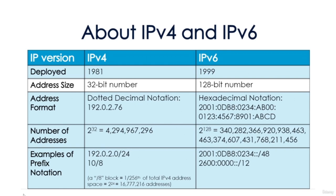IPv4 uses 32-bit source and destination addresses, usually shown in dotted quad format, such as 192.168.2.4. A 32-bit address field allows 2 to the 32nd, or nearly 4.3 billion addresses.